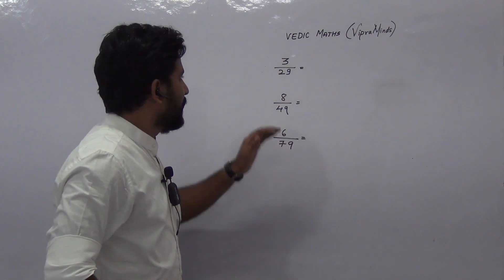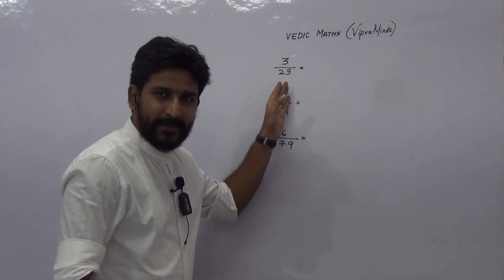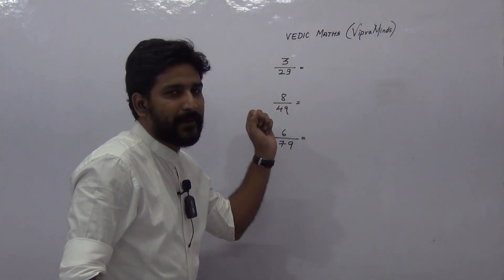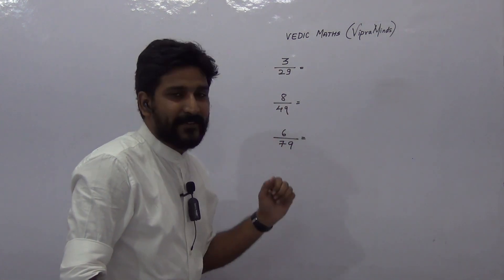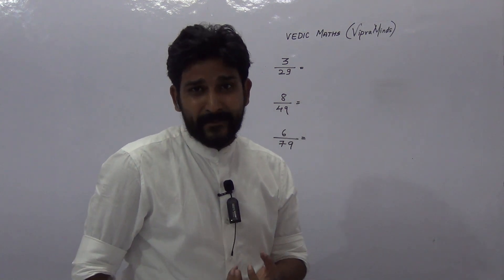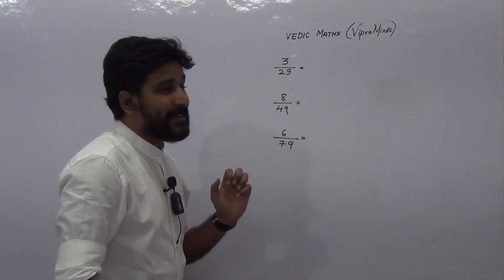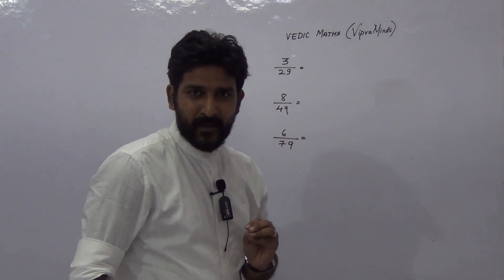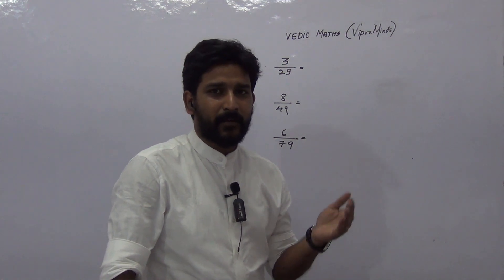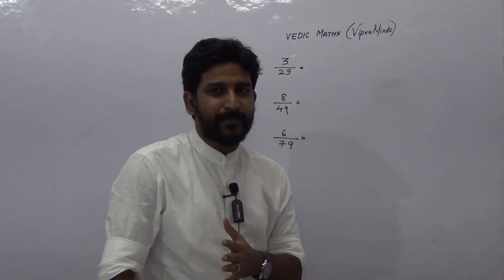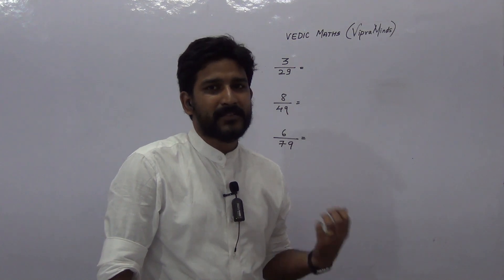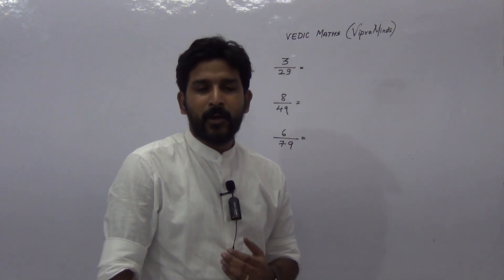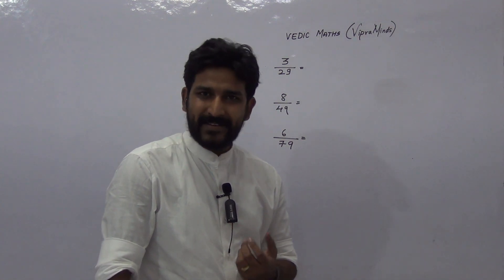So how can we divide any number by such numbers? If you are going to divide numbers like 3 divided by 29, or 6 divided by 79, by the traditional method it will take more time. So we are going to see a Vedic Math technique to divide such numbers in a very easy way. Just learn this technique and apply it in a number of examples, and you can solve such questions within a second.